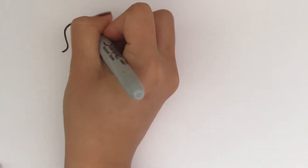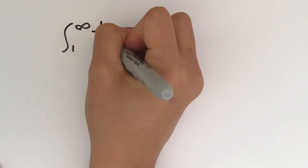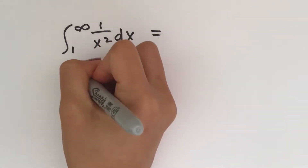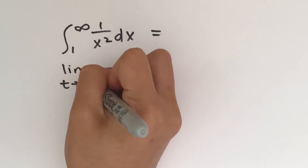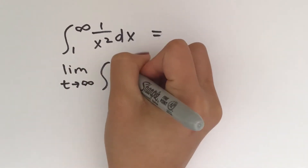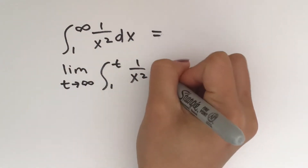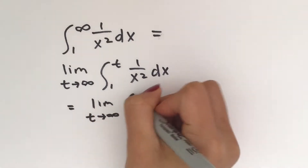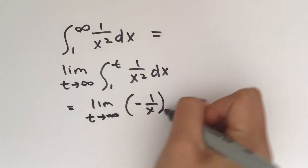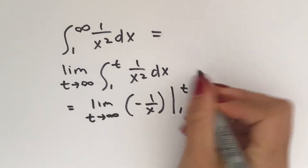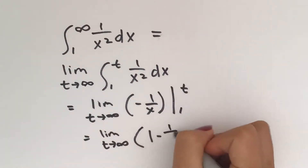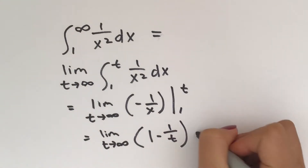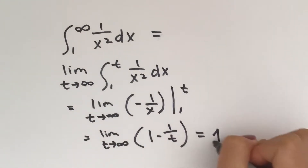Now let's try an example problem. We're going to take the improper integral from 1 to infinity of 1 over x squared dx, and we can see this matches our first general case. So we take the limit as t approaches infinity of the integral from 1 to t of 1 over x squared dx. We anti-differentiate to get negative 1 over x from 1 to t, then plug in to get 1 minus 1 over t. Because the limit as t approaches infinity of 1 over t is 0, we get the answer 1.